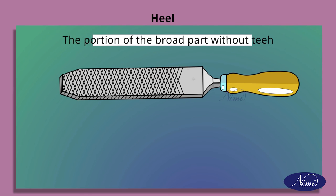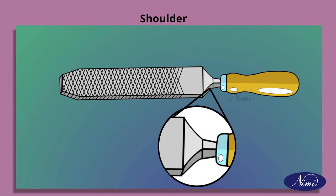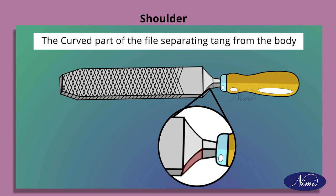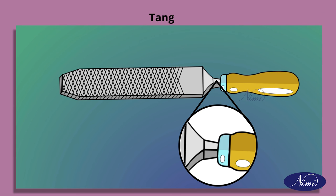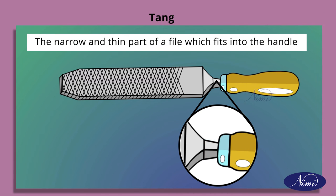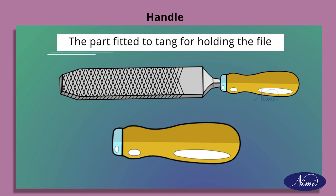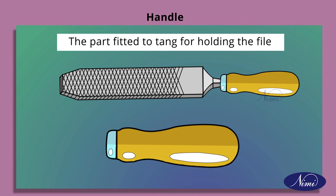Heel: the portion of the broad part without teeth. Shoulder: the curved part of the file separating the tang from the body. Tang: the narrow and thin part of a file which fits into the handle. Handle: the part fitted to the tang for holding the file.